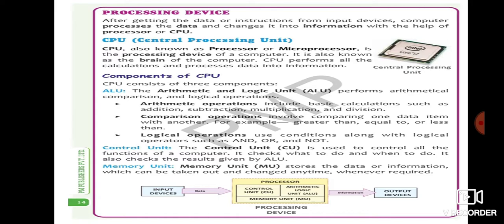So that was the first image scanned by him after making the scanner. So now we are going to see processing device. After getting the data or instruction from input device computer processes the data and change it into information with the help of processor or CPU. So why we are using processing device? So to change any of the information or data into a proper thing. Or if we have to change any of the data or instruction into a proper information, we are using processor or central processing unit.